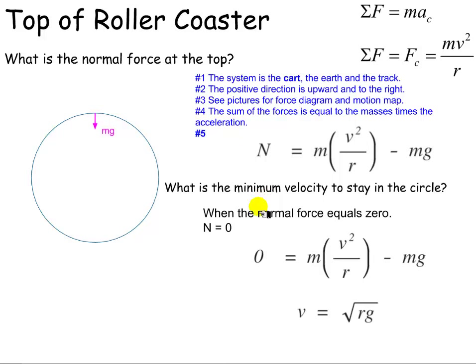So at that minimum velocity, something very specific happens. The normal force goes to zero. Notice we didn't draw a normal force. And the only force keeping us inward, keeping us centripetal, would be the force due to gravity, or mg.